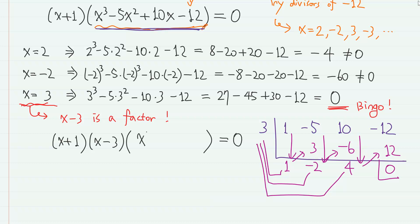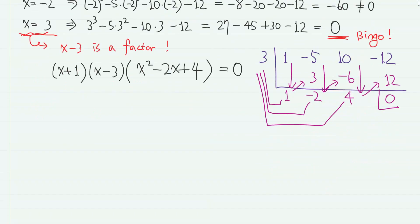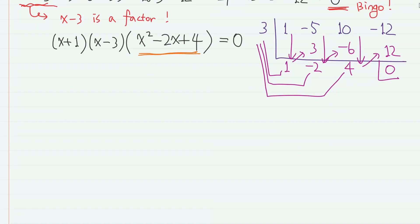Now this part is no longer factorable, but we can just apply quadratic formula for this one. So we have x equals, from here, minus 1. From here, 3. And from here, 1 plus minus square root of 3i.